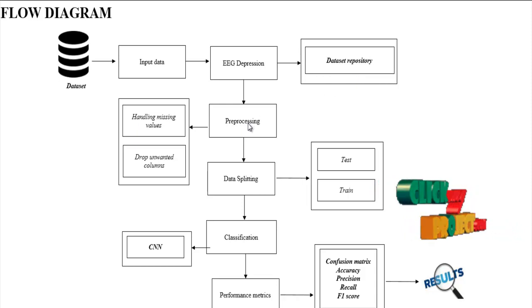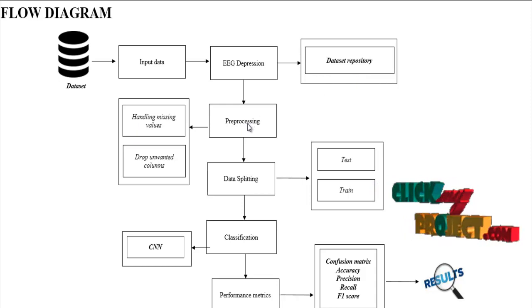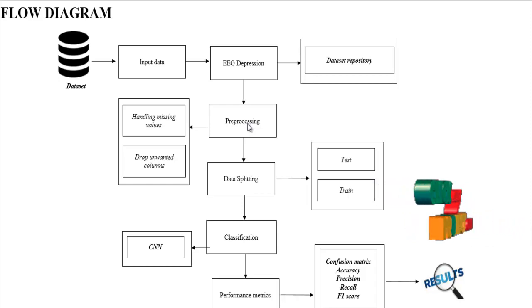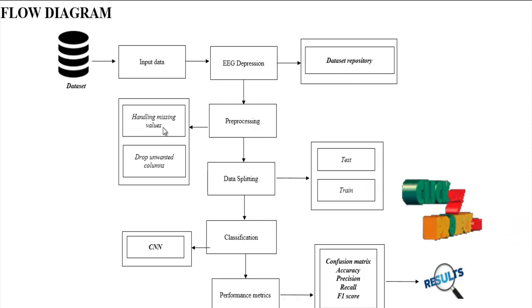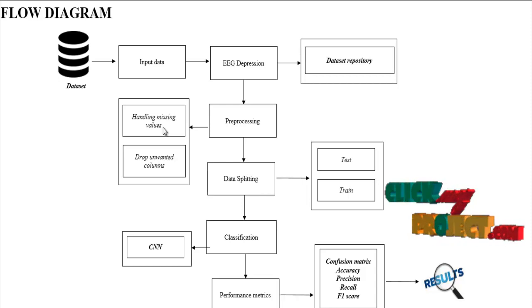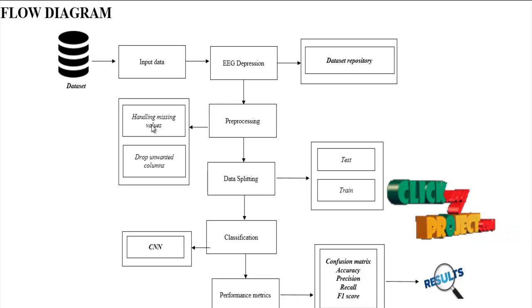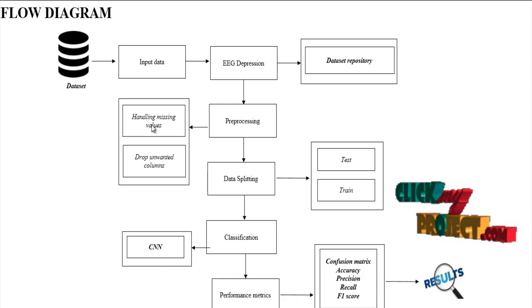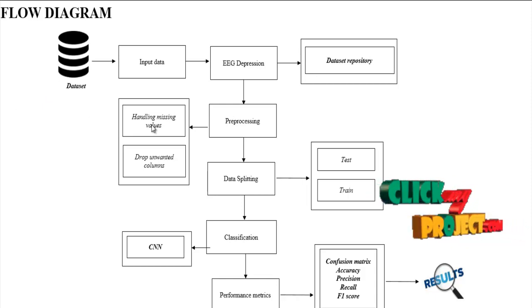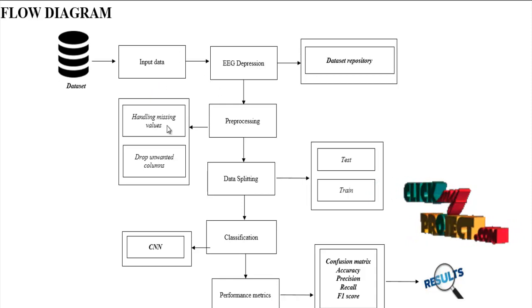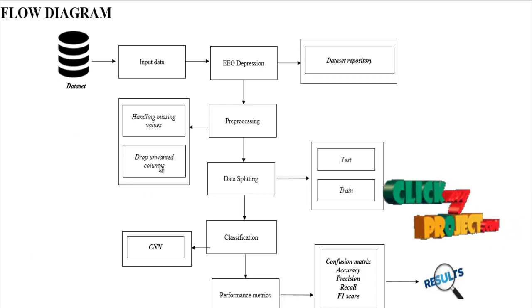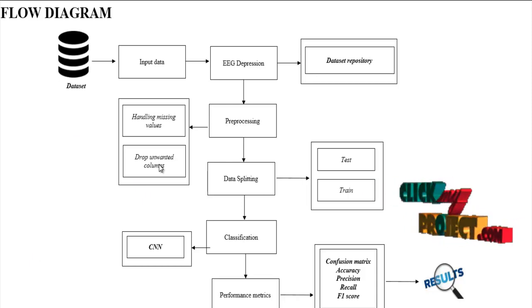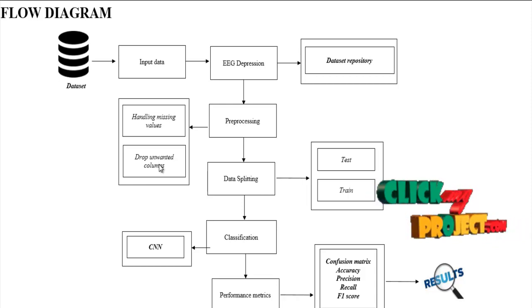After that, we implement the preprocessing step. In this step, we remove unwanted data or unnecessary noise. We handle missing values and drop unwanted columns, and encode the data if needed. Handling missing values means checking the input dataset for any missing values; if present, we replace them with zeros or null values. Dropping unwanted columns means removing attributes that are not required for our process.